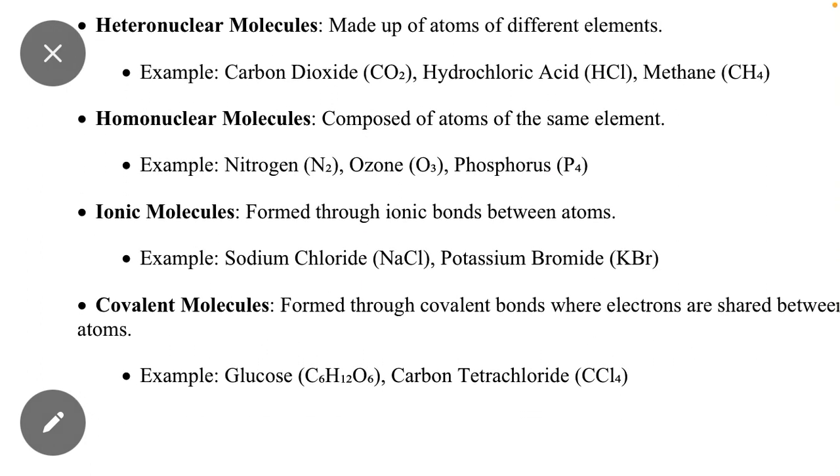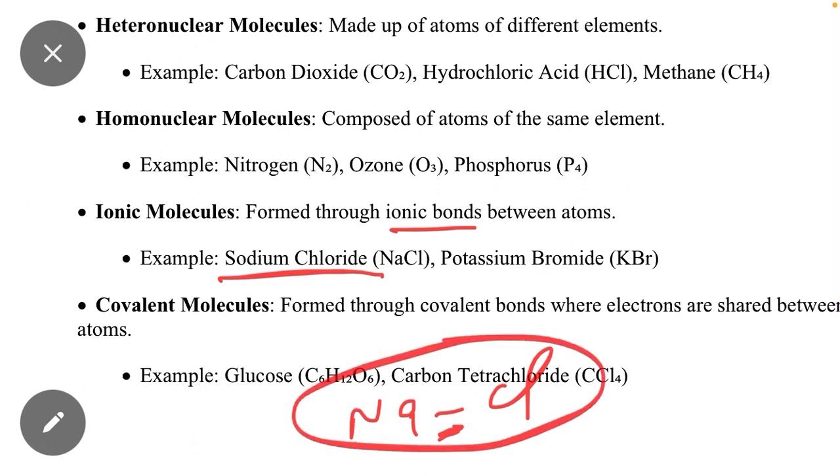The next type is called ionic molecules. If the bond between atoms of a molecule is ionic, then that molecule will be called an ionic molecule. Ionic molecules are formed through ionic bonds between atoms. For example, sodium chloride (NaCl)—the bond between these two atoms is an ionic bond. That is why this molecule will be an ionic molecule.